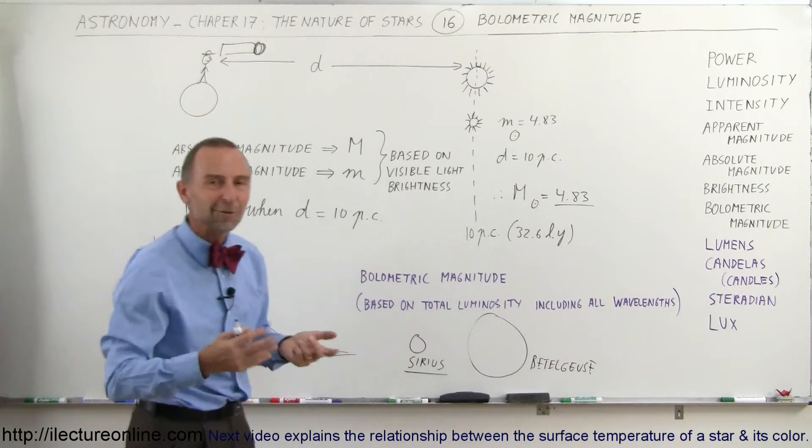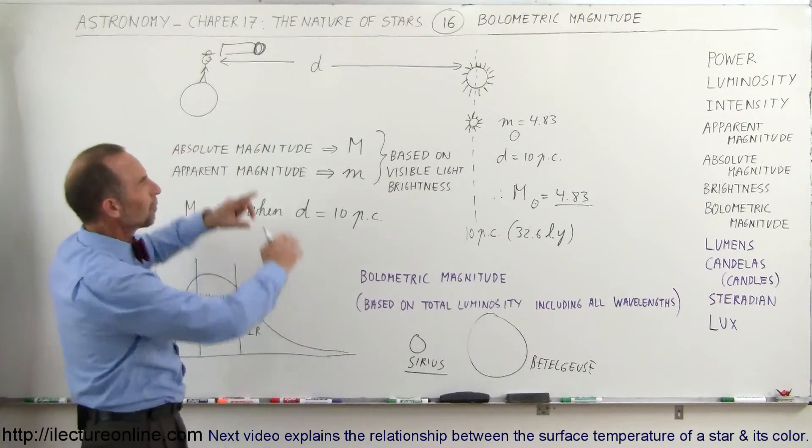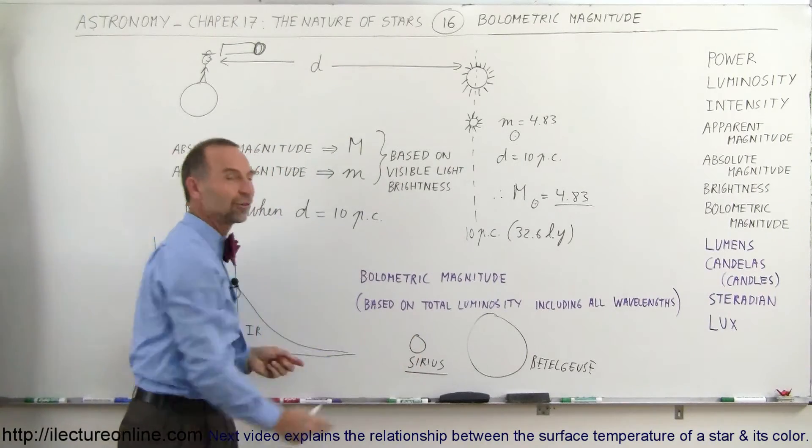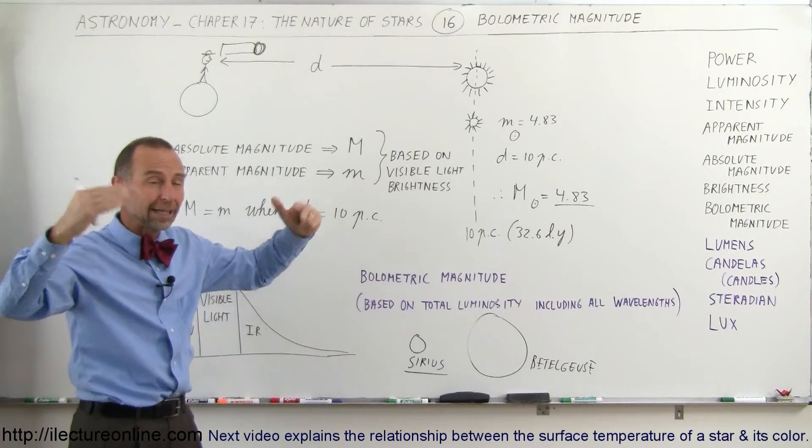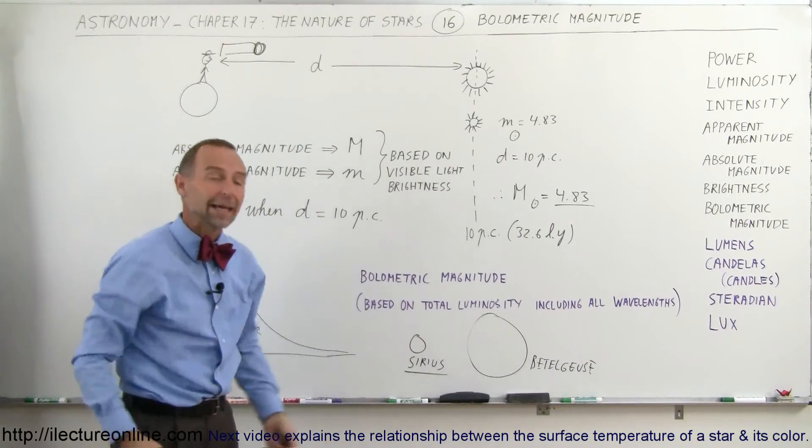Now, I didn't quite draw the relative size of Betelgeuse. Betelgeuse would be bigger than the whiteboard compared to the Sirius being this big. But it's such a large star that it puts out an enormous amount of energy, enormous amount of luminosity.